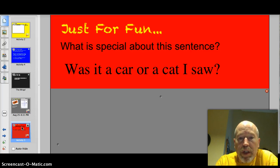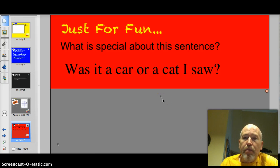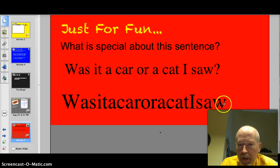What is special about this sentence? Was it a car or a cat I saw? This sentence reads the same, both forward and backwards, and apparently it's the only sentence in the English language that'll do that. I'll show you what I mean. Look at it. Was it a car or a cat I saw? Look backwards. Was it a car or a cat I saw? Is that weird or what?